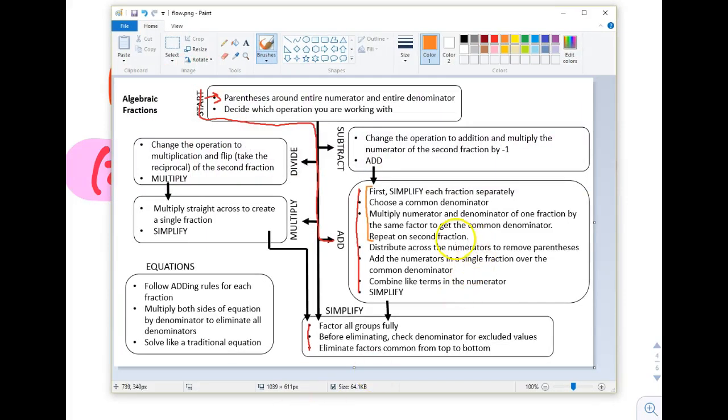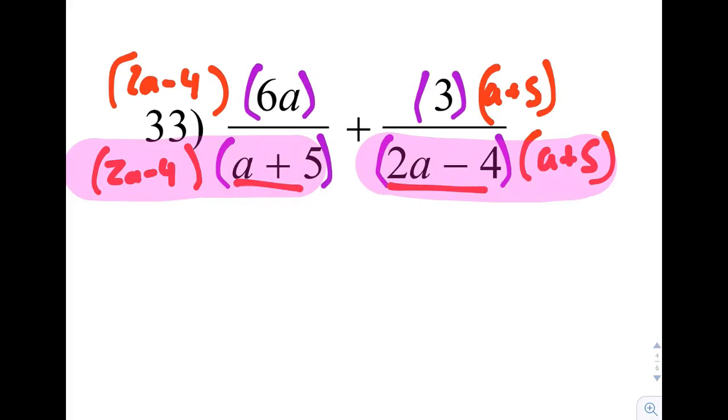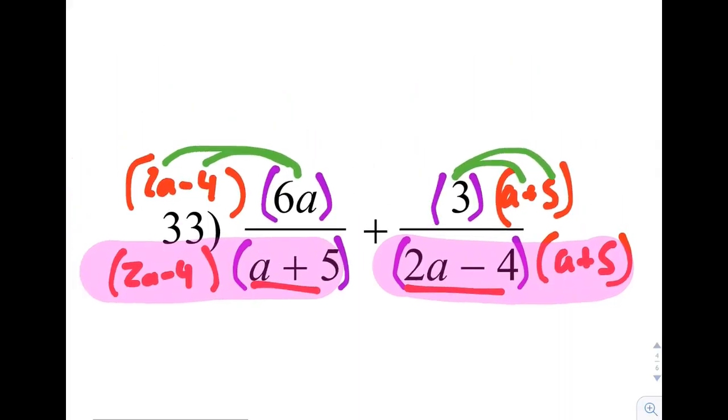Let's go back to the chart. Here, it says we multiply the numerator and denominator of one fraction by the same factor to get the common denominator and do the same for the other fraction. We did that, and we are moving on to distributing across the numerators to remove parentheses. So now we need to distribute to remove parentheses. When I distribute, I tend to go from the single term to other things. So in this case, we have a single term, and we have a double term here, a monomial and a binomial. And we have the same thing going on the other side.